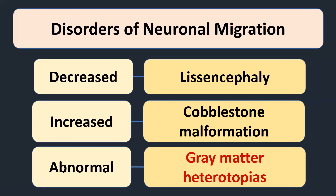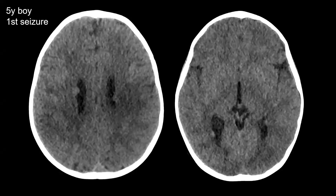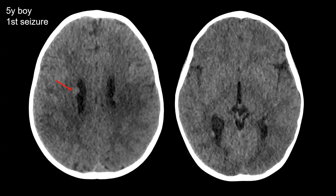A band heterotopia, or so-called double cortex syndrome, can be considered a gray matter heterotopia. This is a five-year-old boy brought to the emergency department because of a first-ever seizure. On this unenhanced CT of the brain, we see several small nodules protruding into both lateral ventricles. They are very discreet, but this was picked up by our radiology registrar on call.